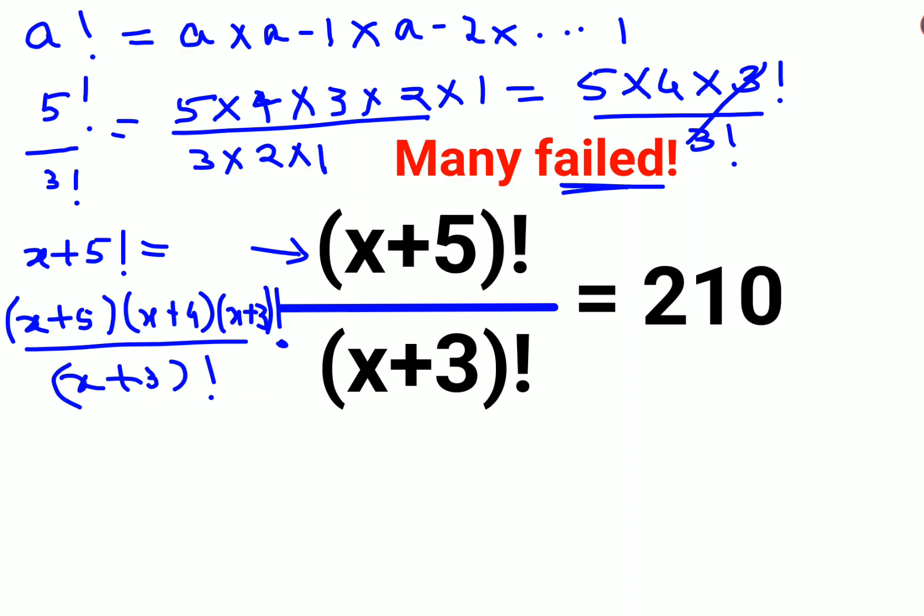That's why I did all of this to make you understand. Now this and this gets cancelled. So basically we are just left with (x+5) and (x+4), and everything equals to 210.